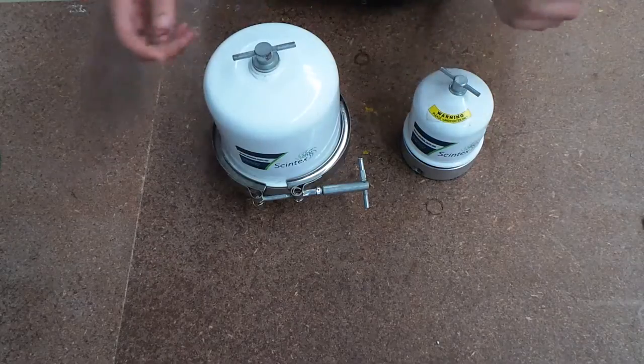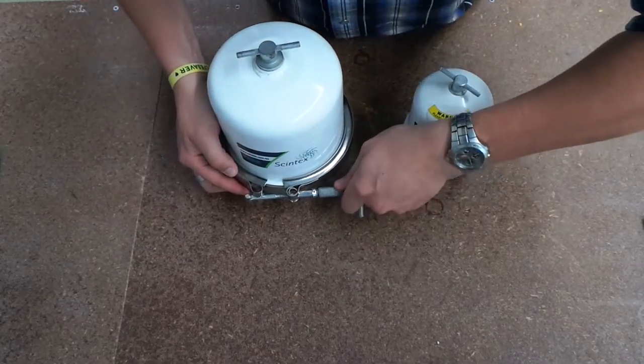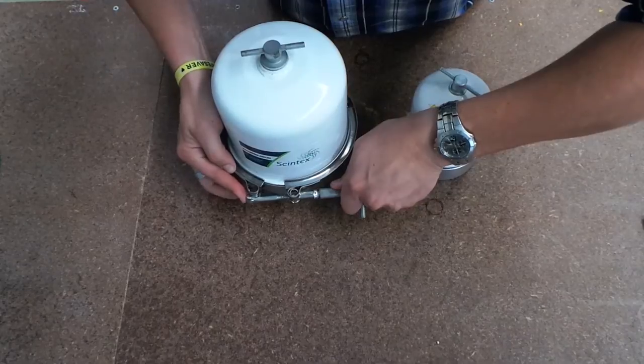Size 60 centrifuge is almost an identical process. However, it also has an extra external clamp that needs to be undone.